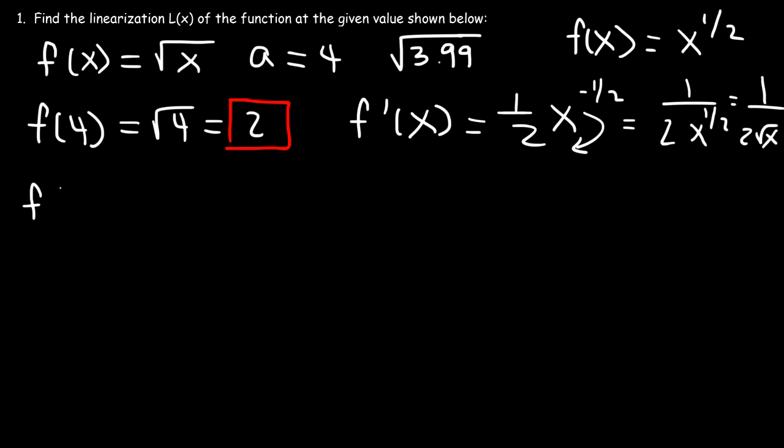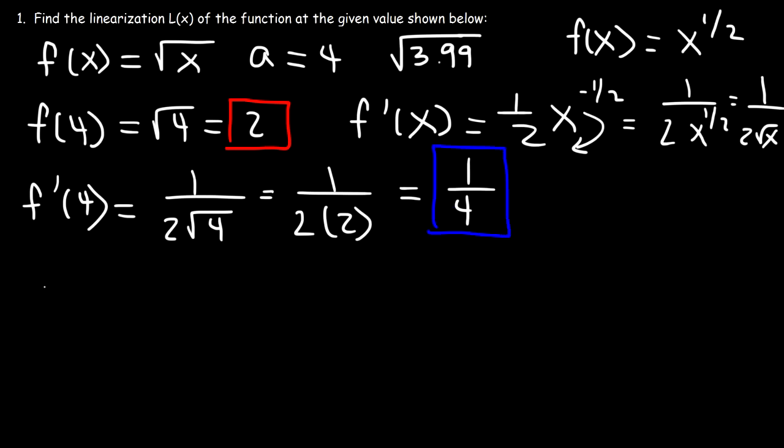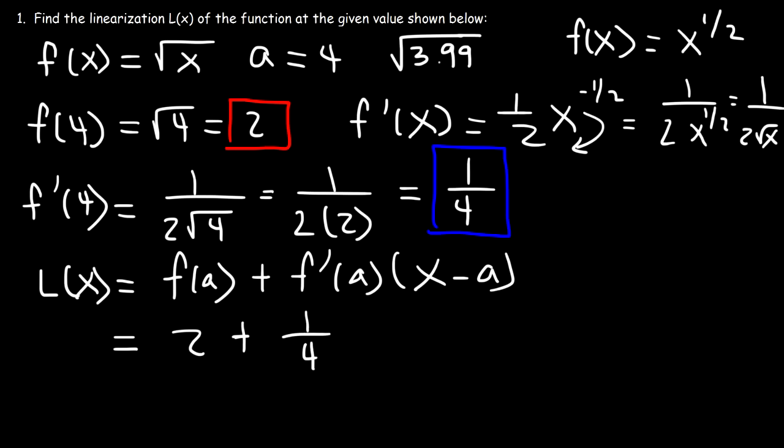So, now, f'(4), because a is 4, that's going to be 1 over 2 times the square root of 4. And the square root of 4 is 2, and 2 times 2 is 4. So, f'(a) is 1 over 4 in this example. So, now, let's rewrite the linearization function, L(x). And we said that was f(a) plus f'(a) times (x minus a). So, f(a) is 2, f'(a) is 1 over 4, and a is 4.